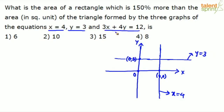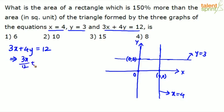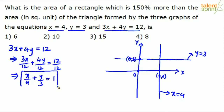Now there is one more line: 3x plus 4y equals to 12. If you look at this, the easiest way to express this equation would be in the intercept form: x by a plus y by b equals to 1. What do we do? Divide both sides by 12. So 3x by 12 plus 4y by 12 equals to 12 by 12, which results in x by 4 plus y by 3 equals to 1. This is the intercept form, so the x-intercept is 4 and the y-intercept is 3.